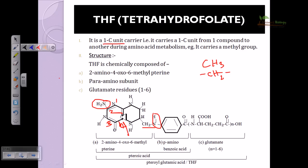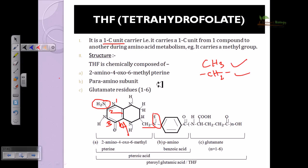This molecule acts as a carrier of different chemical groups like methyl, ethyl, or formyl groups, which can be transferred from one moiety of a reaction to another. In whole, the combination of these structural parts is called pteroic acid.